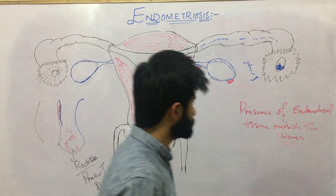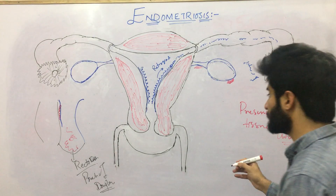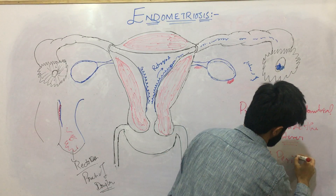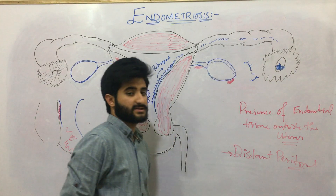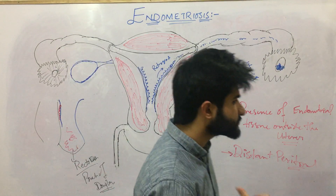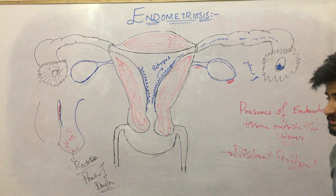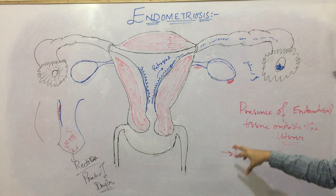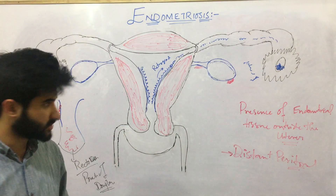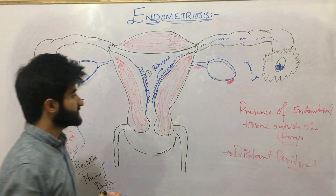Scientists then discovered that endometrial tissue can also be deposited at distant peritoneal sites — inside the peritoneal cavity but far from the uterus. The retrograde theory remains the most accepted, but to explain this distant peritoneal spread, another theory emerged: the metaplastic theory.